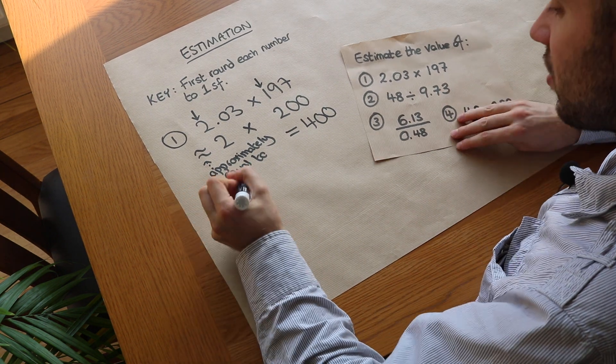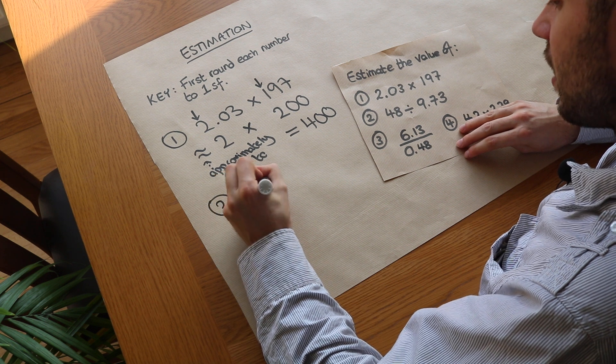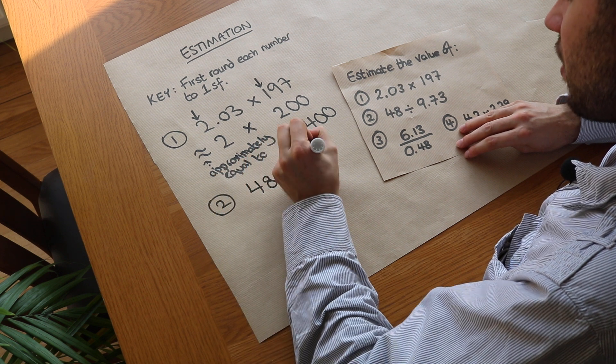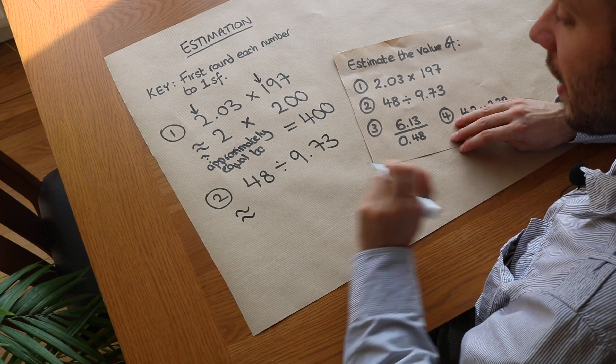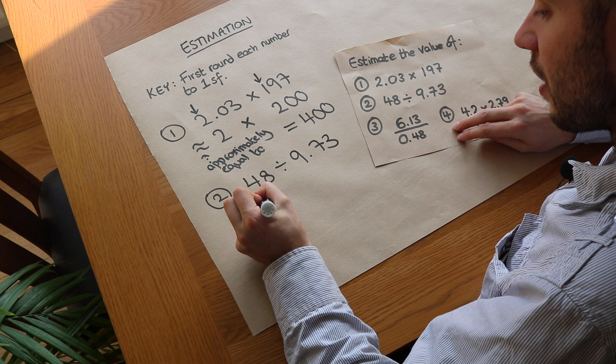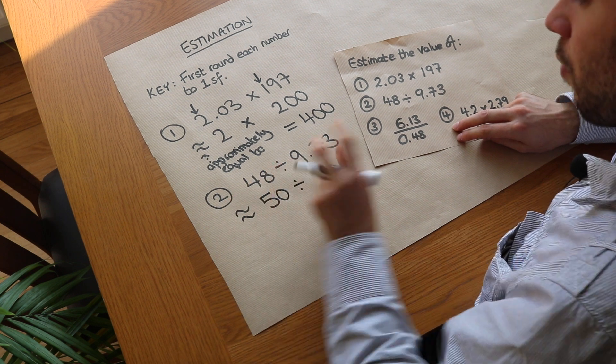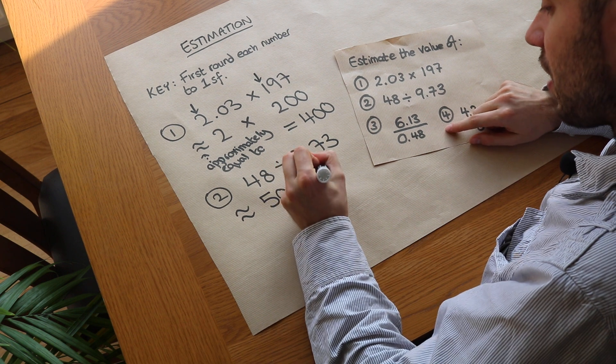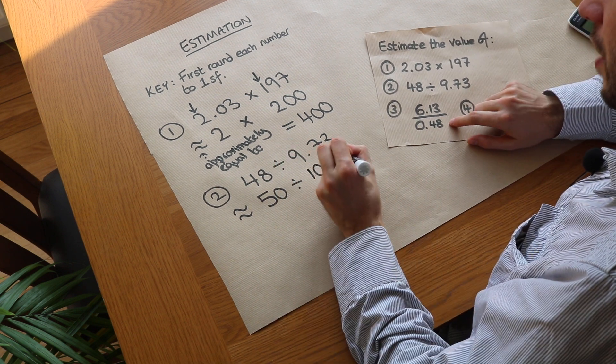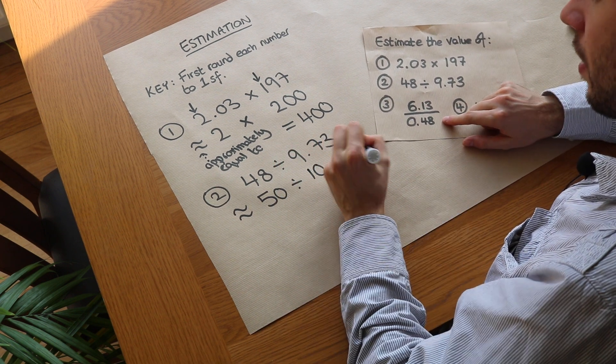What about question 2? We've got 48 divided by 9.73. That's approximately equal to - well using the same method that's 50, and this to one significant figure is 10. Then 50 divided by 10 equals 5, so this is roughly 5.